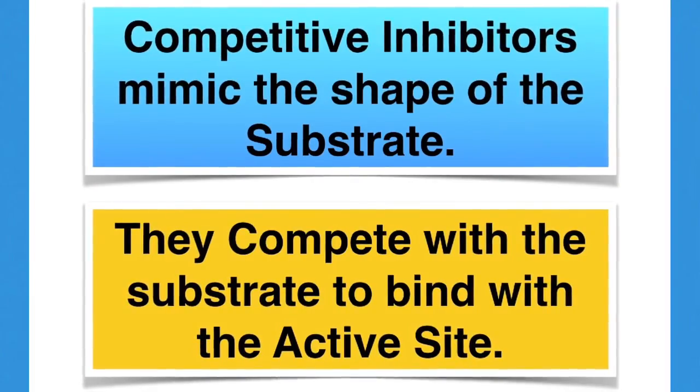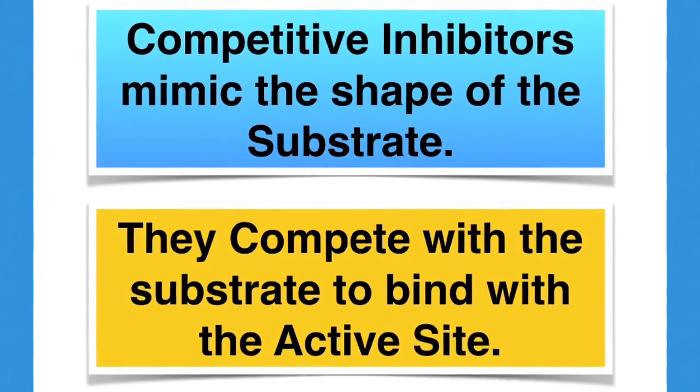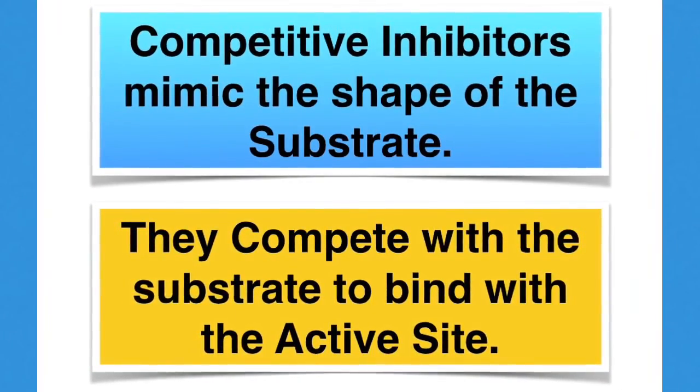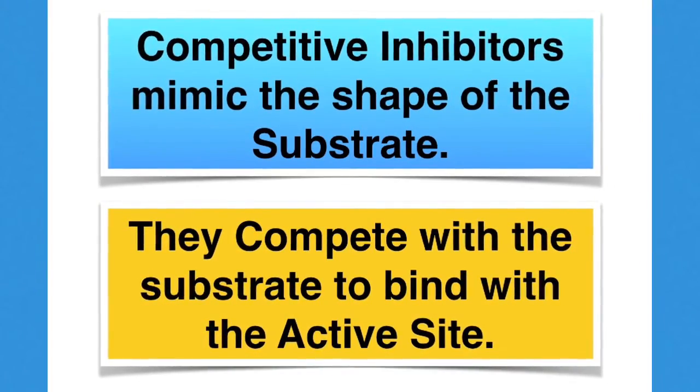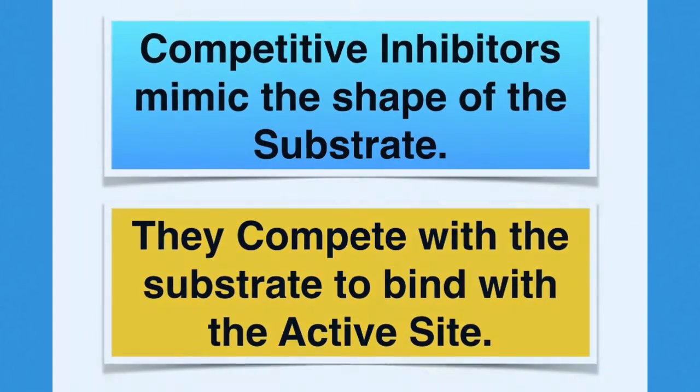Competitive inhibitors are those substances that can mimic or copy the shape of the substrate. This means that they can then bind with the active site. And if they do this, then no substrate can and so there's no reaction.